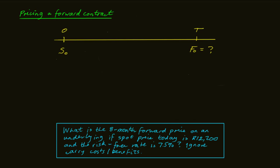What we are talking about is if, for example, you're asked to determine the forward price of an eight-month forward contract on an underlying with a spot price today of 12,200 Rand, what is that forward price given a risk-free rate of 7.5%.